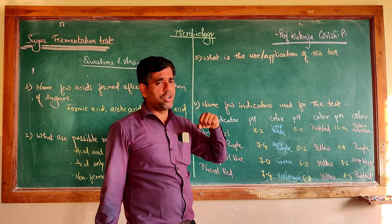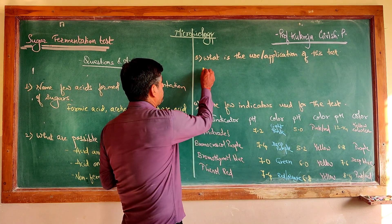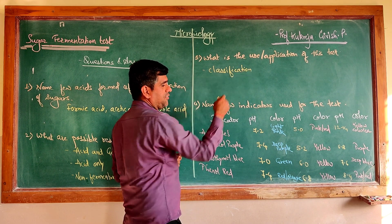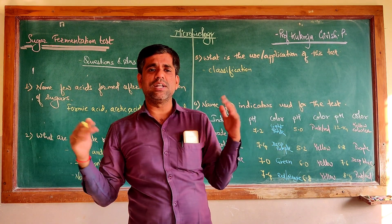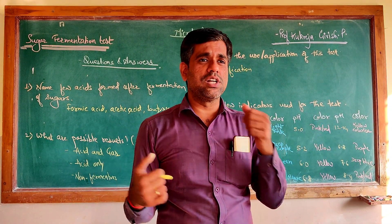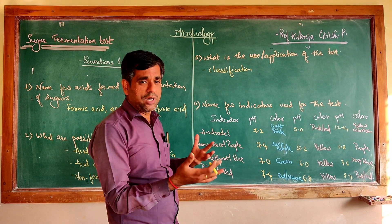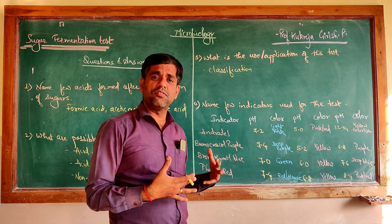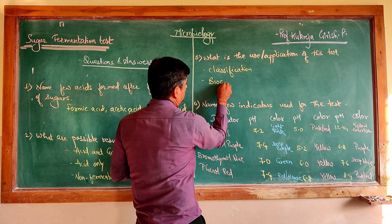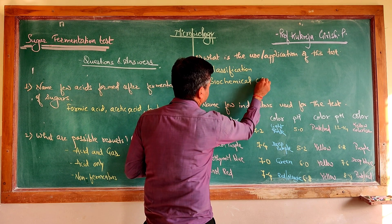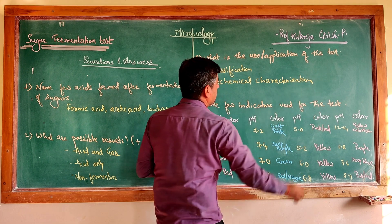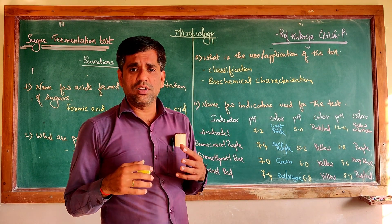What is the application of this test? It is helpful in the classification of organisms. Different sugars can be tested — glucose, lactose, maltose, mannitol, and a host of others — giving good data for comparing organisms. It is used for differentiating members of Enterobacteriaceae, biochemical characterization, understanding enzyme systems, and knowing metabolic pathways.